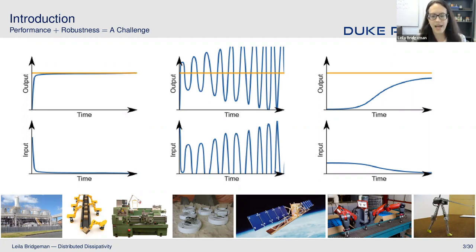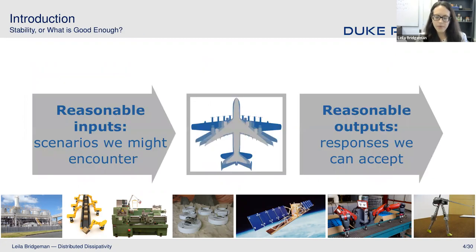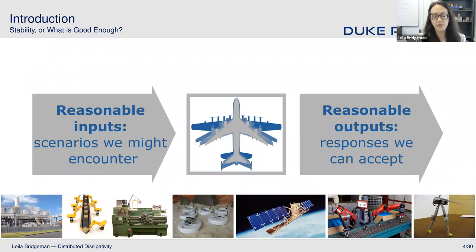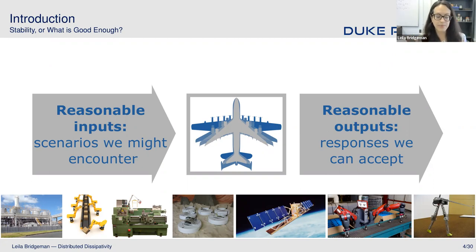How do we make this compromise best? We want to sacrifice as little as possible to ensure stability — to make sure that whatever inputs and scenarios we might reasonably encounter will result in output responses that we can reasonably accept. That's our basic stability criterion. And if we meet that, then we can focus on performance as much as we want.